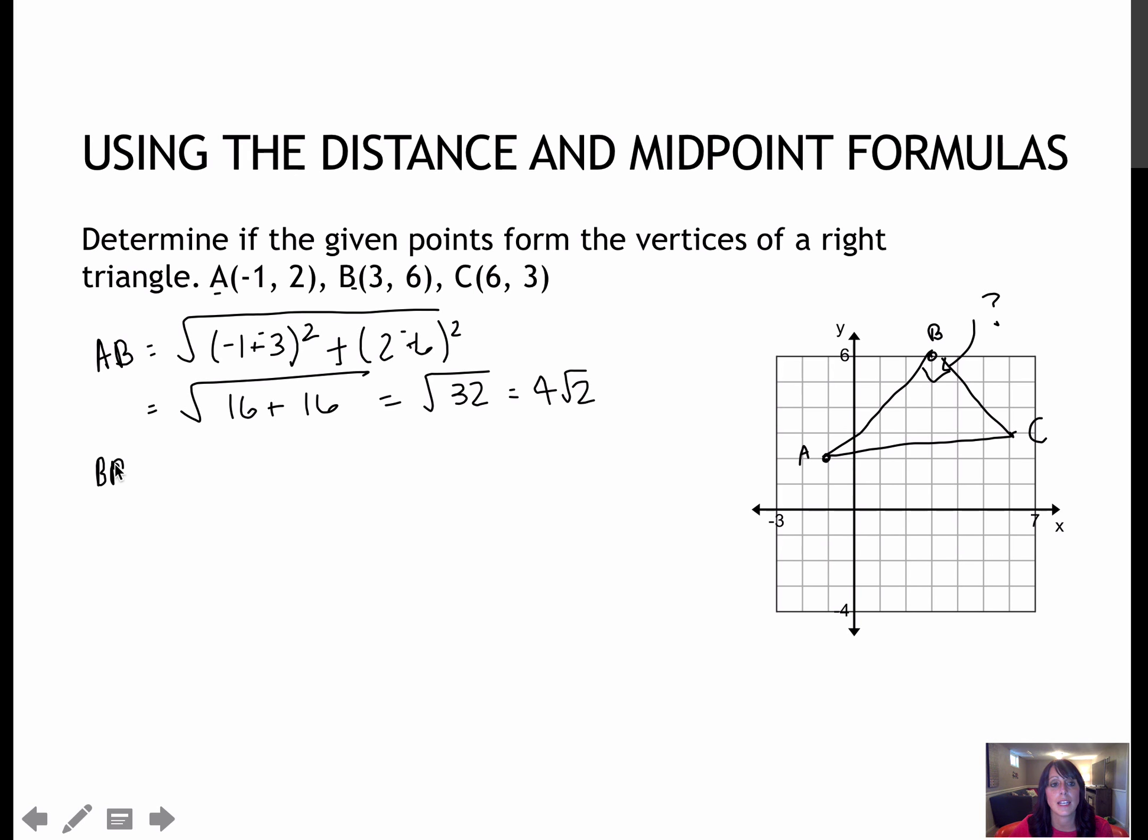Now I'm going to find BC in the same way. BC would be (3 - 6)² plus (6 - 3)². That gives me 9 and 9, which gives me radical 18 or 3 radical 2.